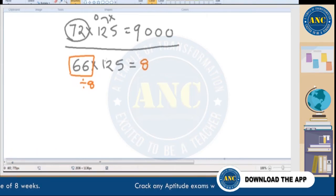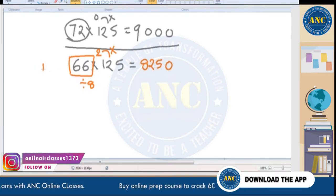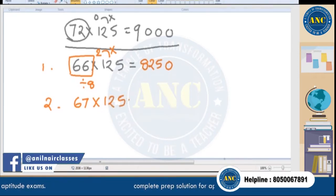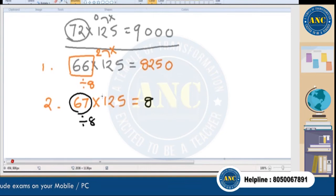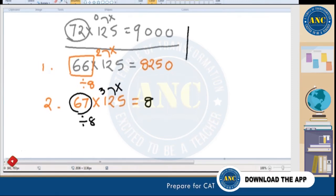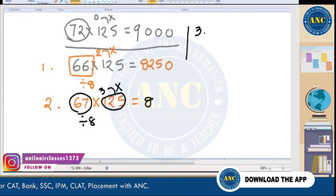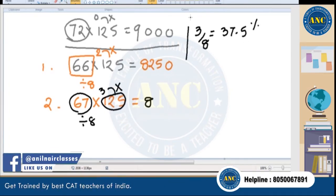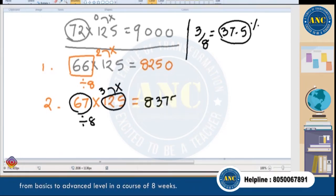For 66 × 125: divide 66 by 8 — 8 eights are 64, remainder is 2. The remainder part is 2 × 125. Now since 2/8 = 1/4, and 1 × 125 = 125... actually 2 × 125 = 250. So 66 × 125: quotient 8, remainder 2, giving 8000 + 250 = 8250.